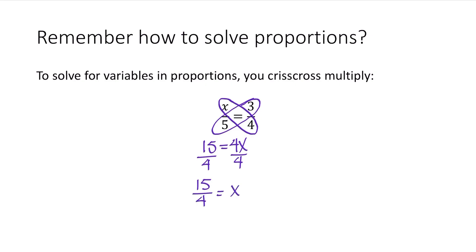All you do is solve the resulting equation. Here I can divide both sides by 4, and that's how you get the value of x — 15 over 4 equals x. If you would prefer, you can make that a decimal: 15 over 4 is 3.75. That's the idea of crisscross multiply, or the butterfly method, whatever you call it.